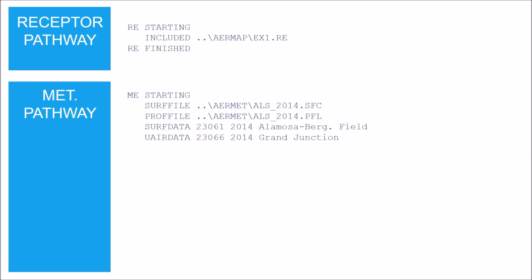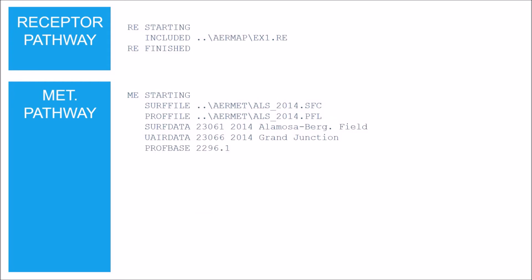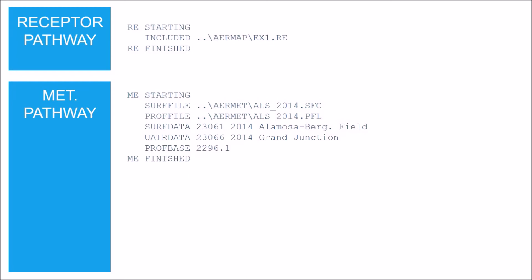The SURFDATA and UPPERAIR keywords are used to describe the surface and upper air meteorological stations respectively. The station number is listed first — this is the five-digit WBAN ID since our station is a National Weather Service station. Then list the start year followed by the station name. The PROFBASE keyword specifies the base elevation for the potential temperature profile. The meteorology pathway must end with the keyword FINISHED.